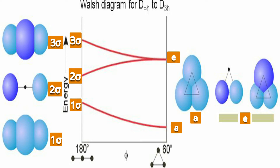The increasing order of energy is 1σ, 2σ, 3σ. Now come to the Walsh diagram. There is a 180-degree bond angle — a linear triatomic molecule — and for that, energetics is represented with proper labeling: 1σ, 2σ, 3σ.